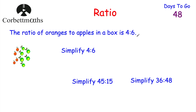Let's start off by looking at simplifying ratios. The ratio of oranges to apples in a box is 4 to 6. If we're asked to simplify that ratio, we can divide both numbers by 2, which gives us 2 to 3. So to simplify a ratio, you look at the numbers — both 4 and 6 are divisible by 2, so you divide both by 2 and get 2 to 3. It's a bit like cancelling down fractions, where you just see what you can divide both numbers by and cancel down.